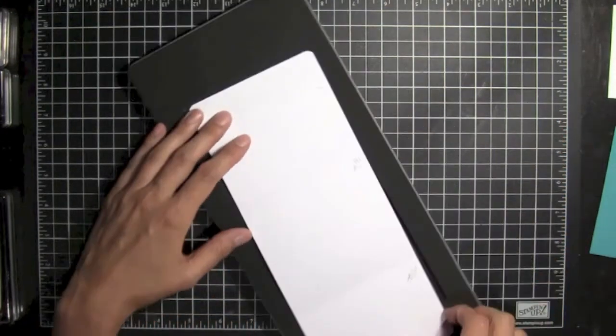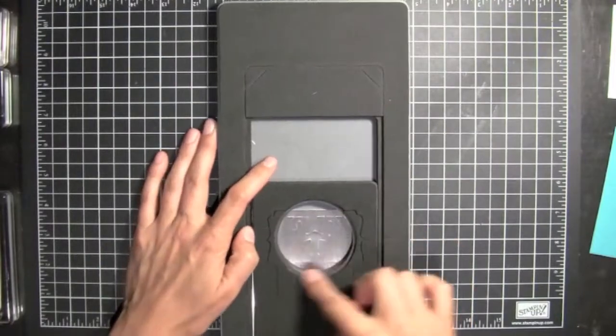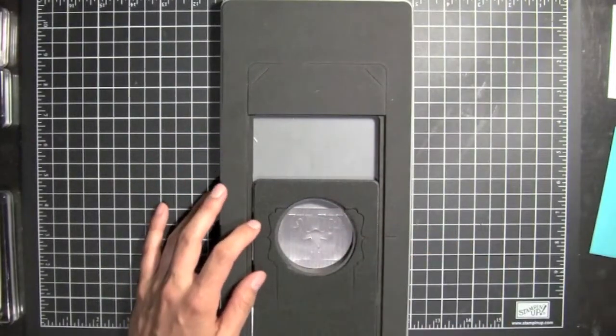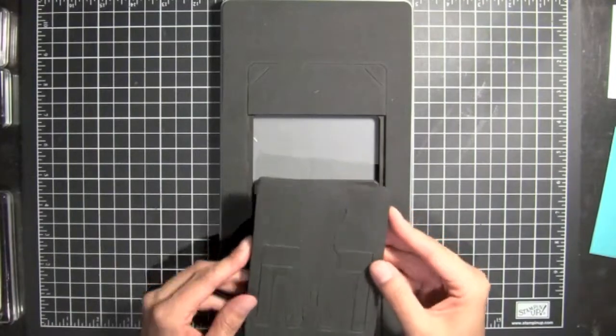And this is a really great die. This is the Deco Labels Pop'n'Cuts that's in here. And there's also the dress form, too, that's available.